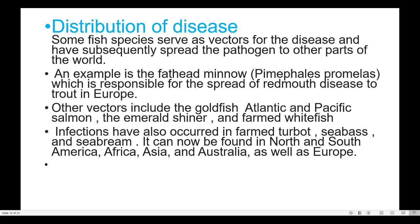Distribution of the disease: Some fish species serve as vectors and have subsequently spread the pathogen to other parts of the world. An example is the fathead minnow, which is responsible for the spread of red mouth disease to trout in Europe.